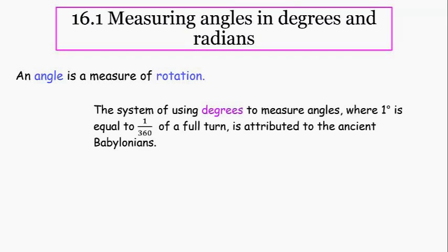First of all, an angle is a measure of rotation. You're used to using the system of degrees, where one degree is 1/360th of a full turn. A full circle is 360 degrees, and this was attributed to the ancient Babylonians. They liked using numbers in base 60, so they cut a circle into 360 equal degrees.